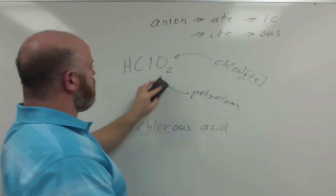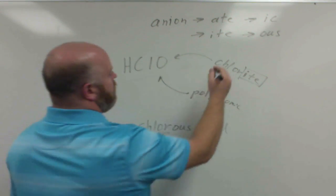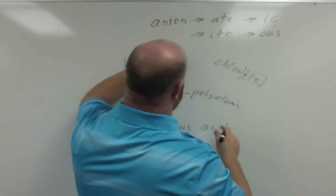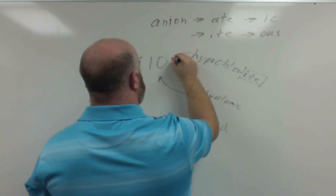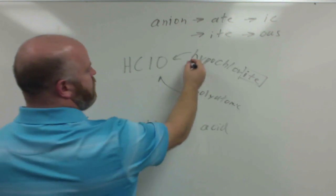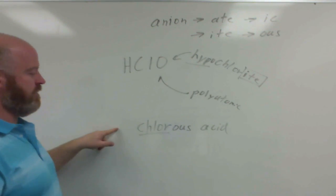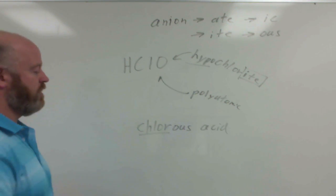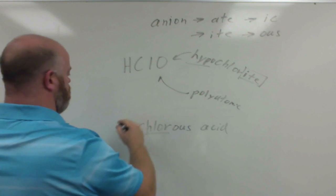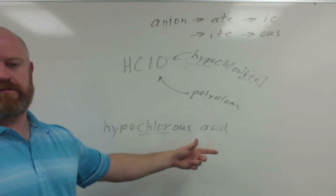It ends in -ite, so we put -ous with it instead. So this would be chlorous acid. And then of course, if we go down another one, and now we have hypochlorite. So we have the prefix hypo on here, we can now use this prefix in front of here to indicate it's the hypochlorite and not just the -ite. So, HClO would be hypochlorous acid.